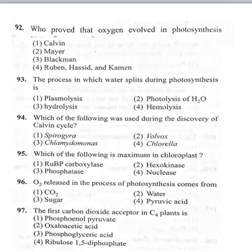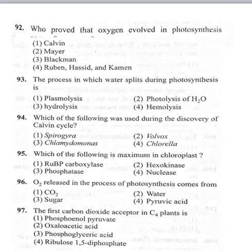92nd bit: who proved that oxygen is evolved in photosynthesis? Option 1 Calvin, option 2 Meyer, option 3 Blackman, option 4 Ruben, Hacid and Kamen. Cornelius Van Niel explained that oxygen is evolved during photosynthesis, but the experimental proof was given by Ruben, Hacid and Kamen, who proved oxygen is evolved from water. Correct option is fourth: Ruben, Hacid and Kamen.